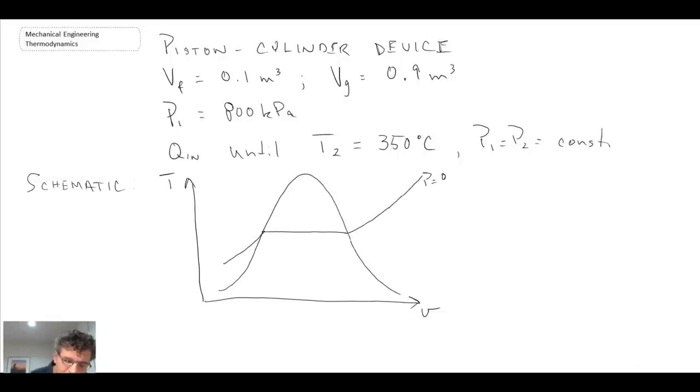So there's our two-phase region with a constant pressure line at P equals 800 kPa. We start off with a mixture of both vapor and liquid, meaning we're somewhere in the two-phase region at state 1. With our process, we're adding heat and heating up the fluid, and eventually we're going to move up to some point in our superheated region at 350 degrees C. So that's what we know about the process.